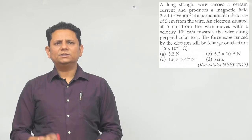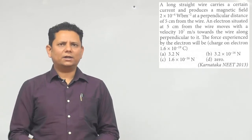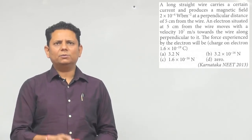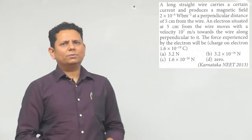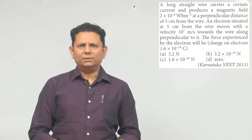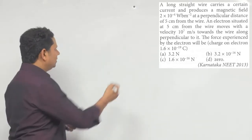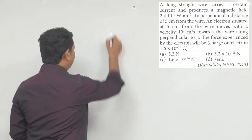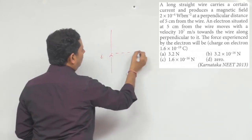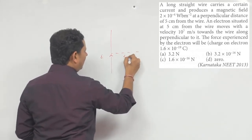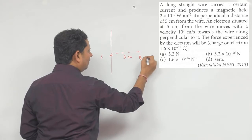The force experienced by the electron will be — charge of electron is given as 1.6 into 10 to the power minus 19 Coulomb, and we have 4 options. Again, it is a simple question. The situation is that there is a wire carrying some current, and at a distance of 5 centimeter, the magnetic field value is given.